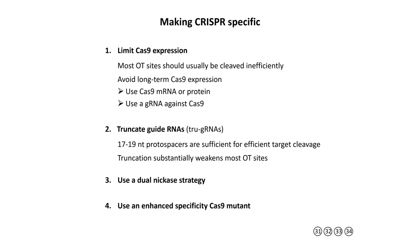So how can we make CRISPR more specific? There are a lot of different ways. The first and most obvious one is: do not express Cas9 for too long or at too high a level. The off-target sites are generally inefficient — the Cas9 complex might not be very stable at these off-targets, or the cleavage activity may not be very high there. The more Cas9 you have and the longer you express it, the more chance of cleaving and mutating these weaker sites. So if you can, use Cas9 mRNA or protein in your most important experiments.